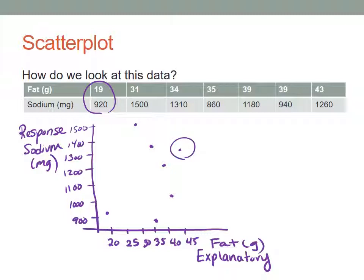Just remember that each one of these points represents a fast food restaurant. This point is Burger King, this point is McDonald's, and each of those points represents the fat and sodium content for a specific experimental unit.